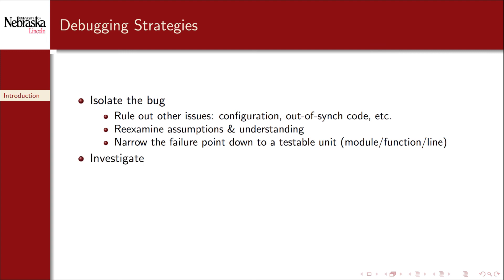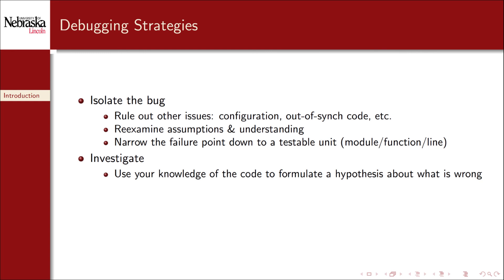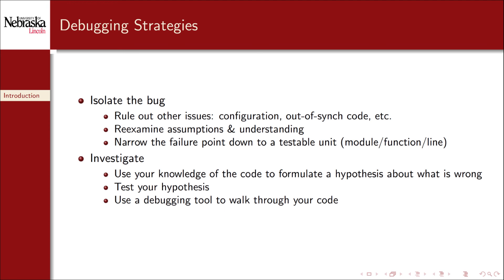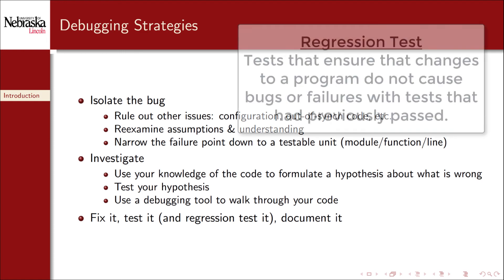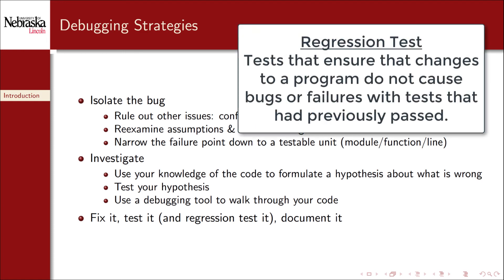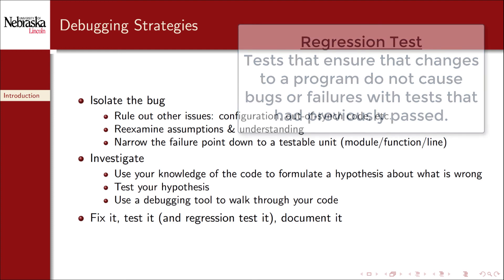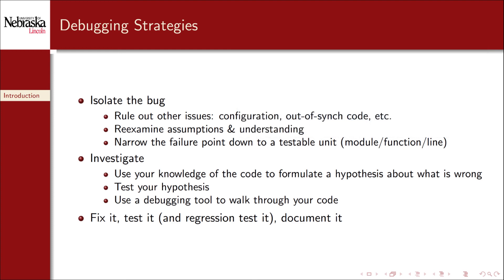We then need to investigate. We need to use our knowledge of the code to formulate a hypothesis about what is going wrong. We then need to test that hypothesis to see if we're right about the error and design an appropriate bug fix. This is best achieved when using a proper debugging tool, which we'll cover in the next part. Finally, we fix it, test it, and run regressions to make sure that our fix doesn't break something else. And we need to document the change — typically this is done with a commit message.